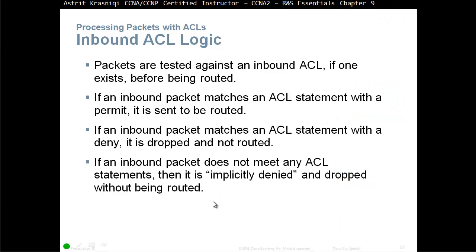Inbound ACL logic: packets are tested against an inbound ACL, if one exists, before being routed. If an inbound packet matches an ACL statement with a permit, it is sent to be routed. If an inbound packet matches an ACL statement with a deny, it is dropped and not routed. If an inbound packet does not meet any ACL statement, then it is implicitly denied and dropped without being routed.